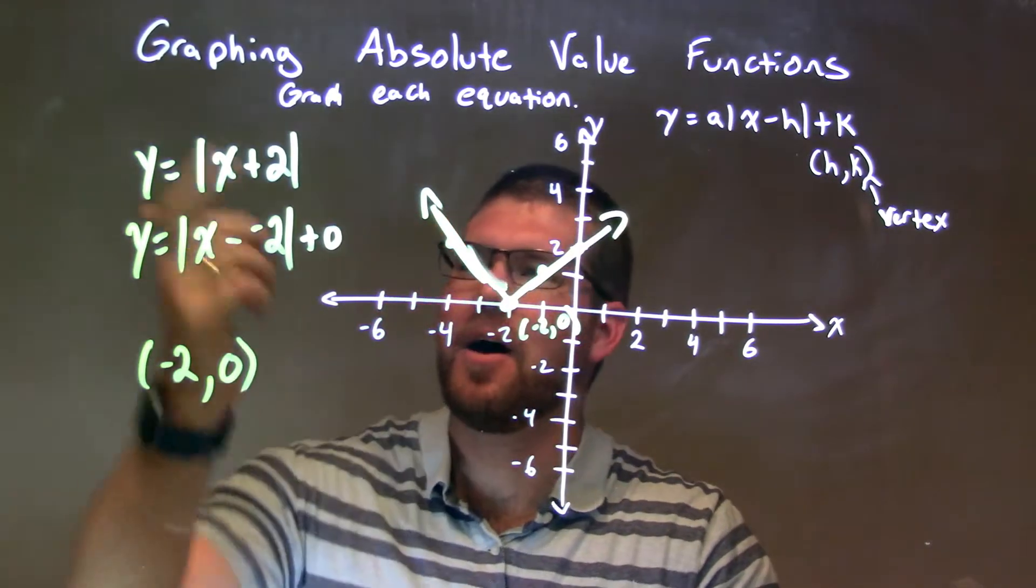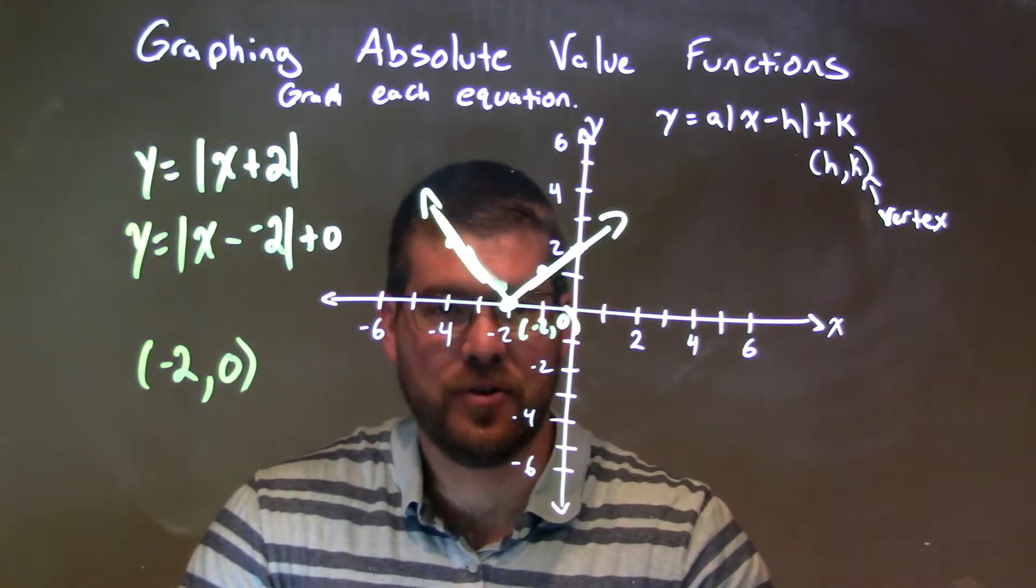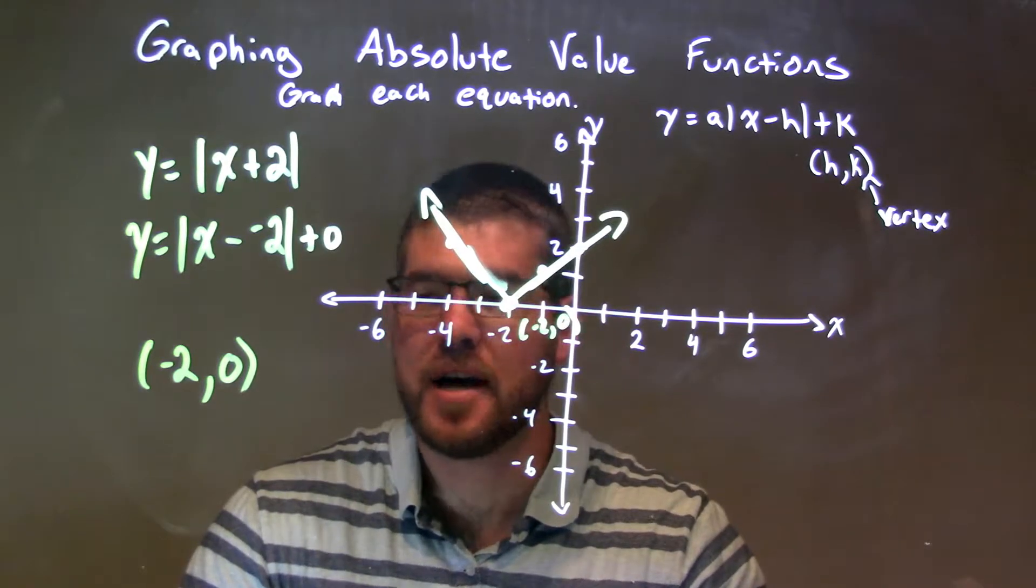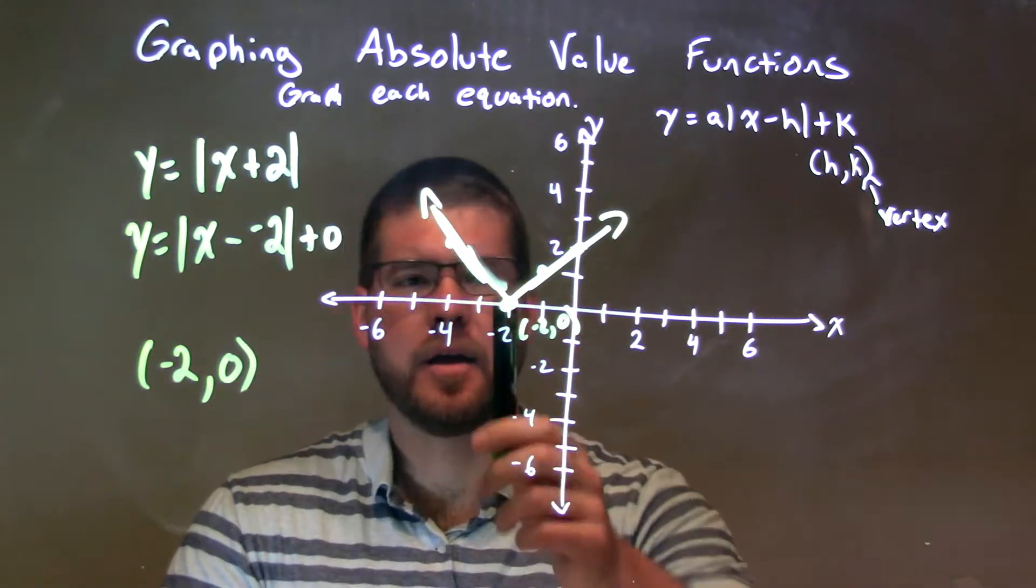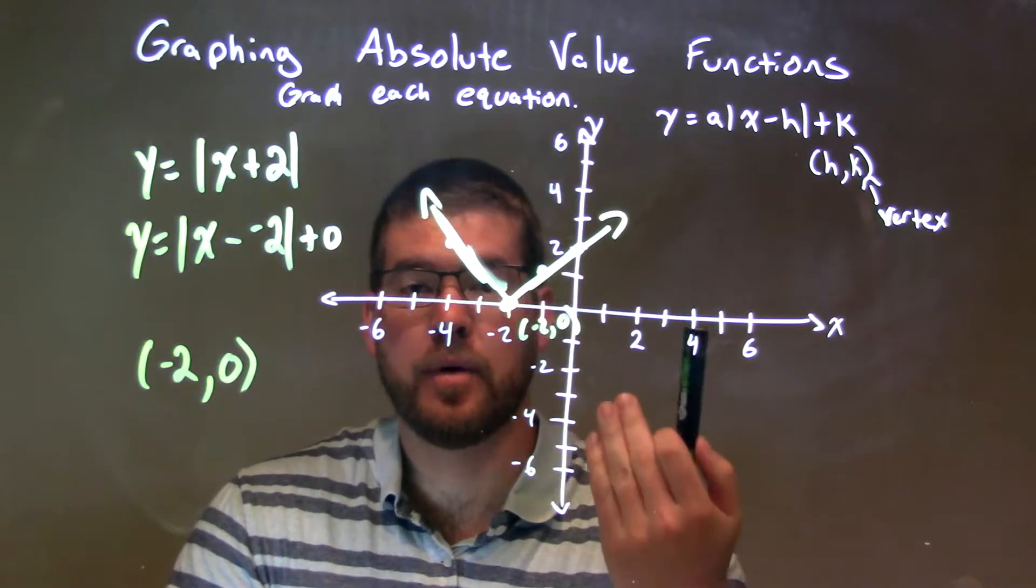So, let's recap. We're given y equals absolute value of x plus 2. Well, that gave us a vertex of negative 2 comma 0. Plot that point right there, negative 2 comma 0.